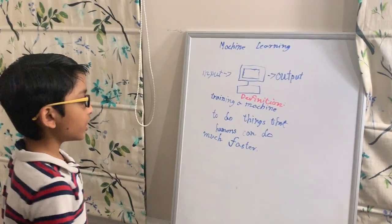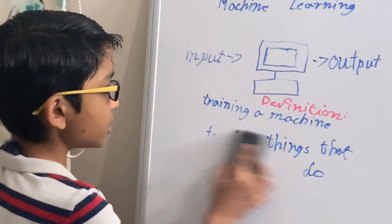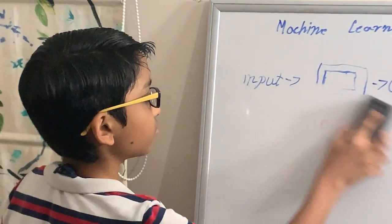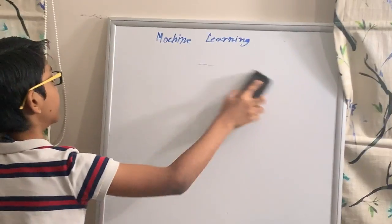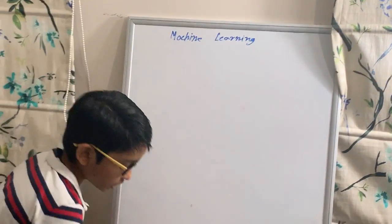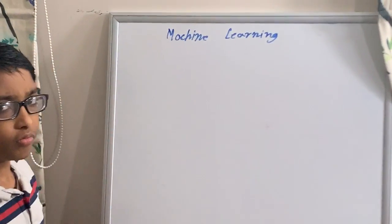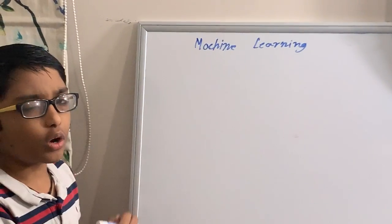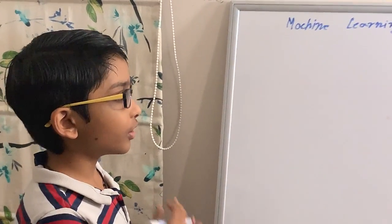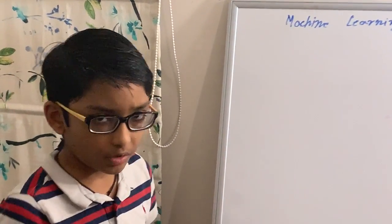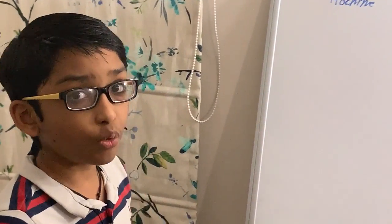Let's say that you want to put in a home movie — you want to play a movie at home, and you want the machine to put in the settings you want.